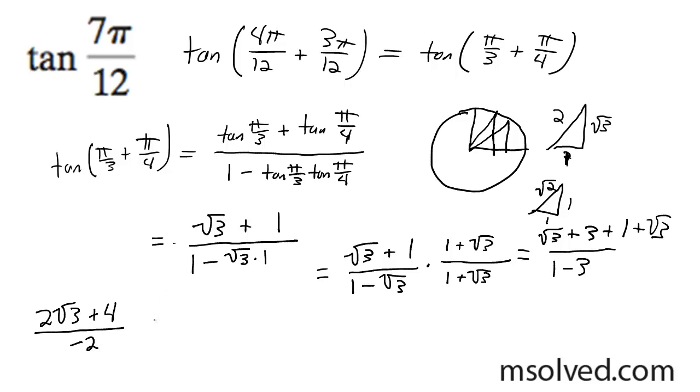You could further simplify this by taking the negative value on the bottom and putting it on the numerator. So you can ultimately make this negative 2 - root 3, because you factor out a 2 on the top and the bottom. And that's it.